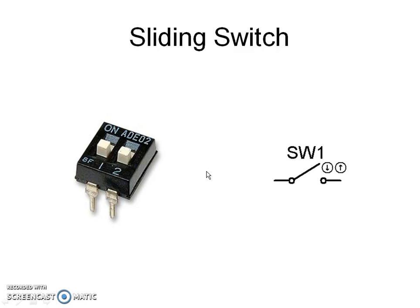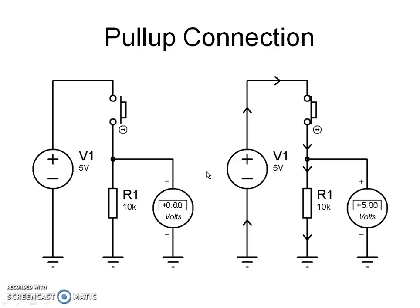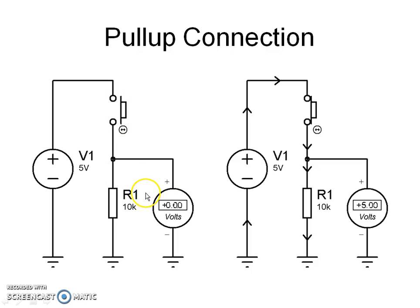There are two ways of connecting a push button and sliding switch. When one end of the push button is connected to ground through a resistor and the other end is connected to +5V, the push button is said to be connected in pull-up. In this case, the voltage across the resistor is the output voltage. With the push button released, the voltage across the resistor is 0V because the current flowing through the resistor is 0. When the push button is pressed, the voltage across the resistor becomes +5V because of current flowing through the resistor and the low contact resistance of the push button.